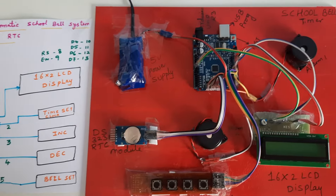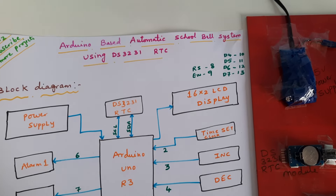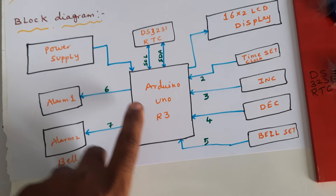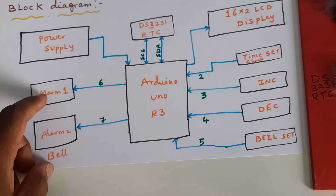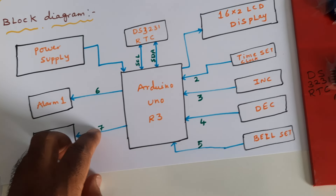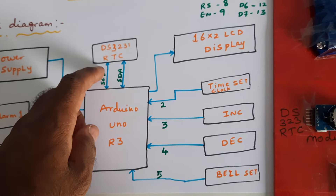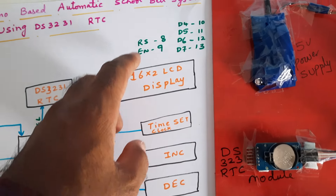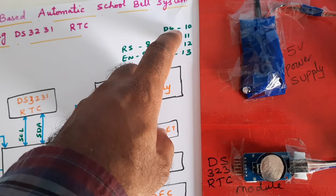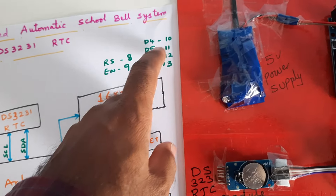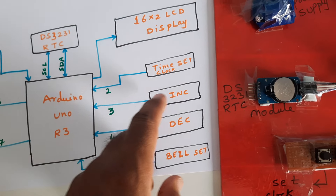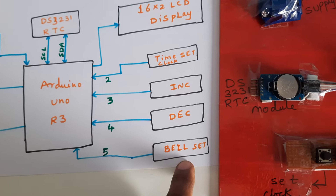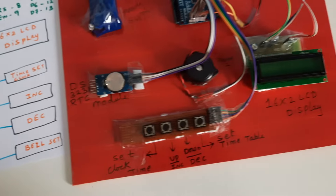The project title is Arduino-based automatic school bell system using DS3231 RTC module. In this project we are using a 5-volt power supply module connected to the Arduino Uno R3 board. There are two buzzers, alarm one and alarm two, connected to pins 6 and 7. The DS3231 RTC module is connected via I2C protocol. The 16x2 LCD display is connected to pins RS, EN, D4-D7 on pins 8 through 13. Push buttons for set time, increment, decrement, and set school bell time are connected to pins 2, 3, 4, and 5.